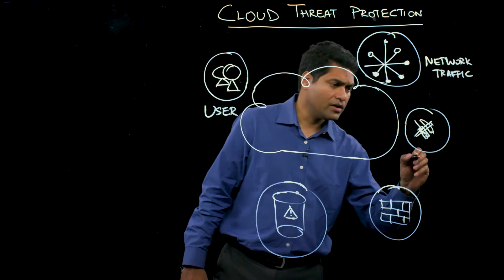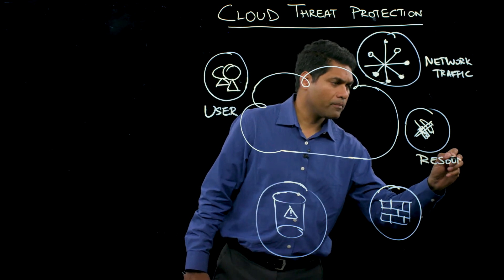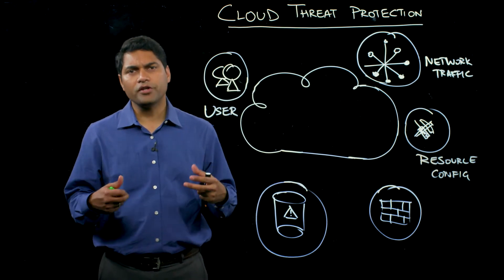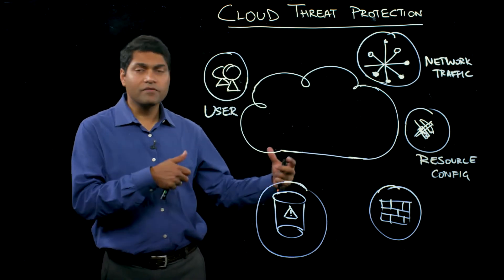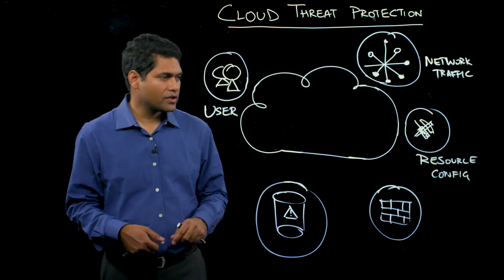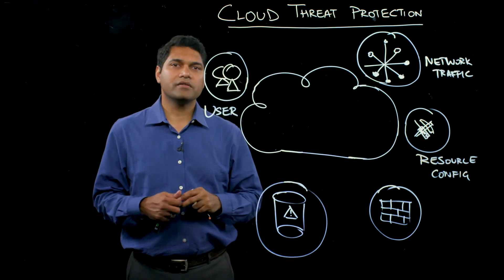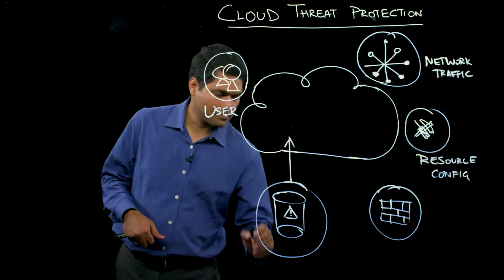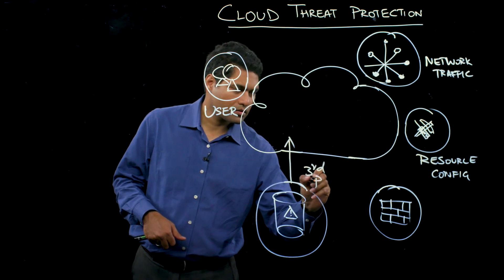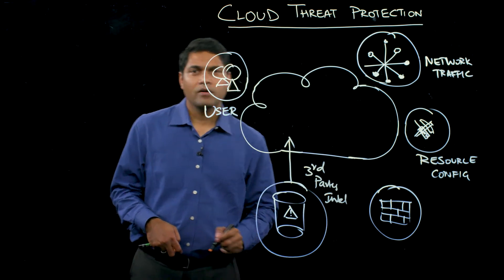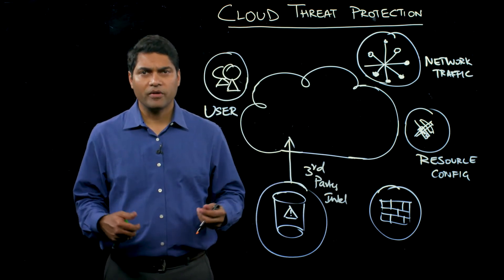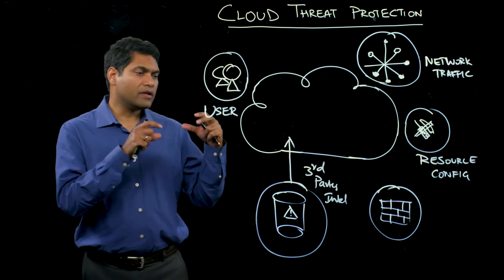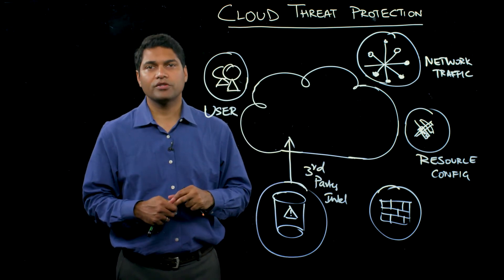Last but not least, of course, is resource configurations. Cloud, to a large extent, is heavily driven by configurations of every resource which has been spun up and spun down. This information is also very relevant — it's a very relevant data source. Now, these three aside, there are two other critical data sources which are very important. One of them is third-party Intel feeds. Third-party Intel is essentially, for example, vulnerability information, host vulnerability information. It could be malware-specific CNC data, basically command and control data. This kind of information also plays a significant role in deciding the security posture for your cloud.